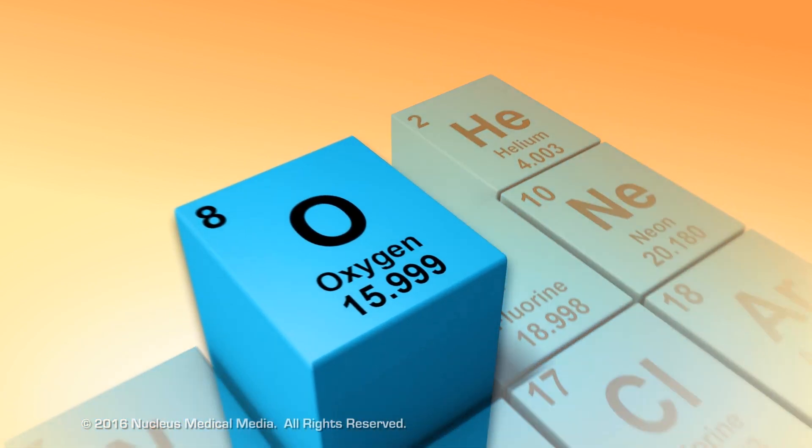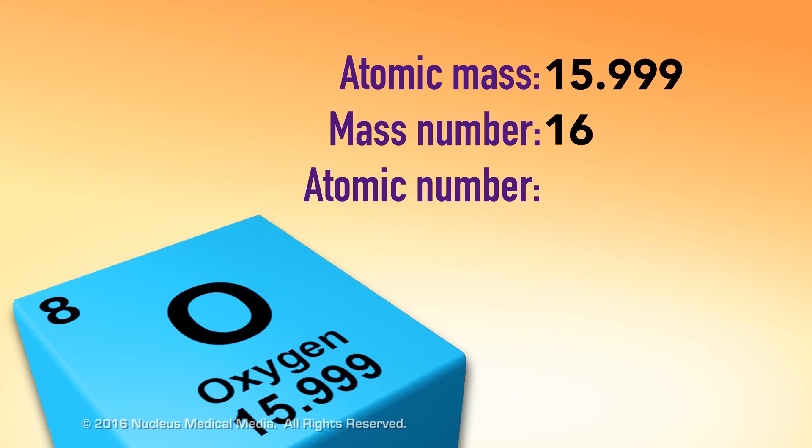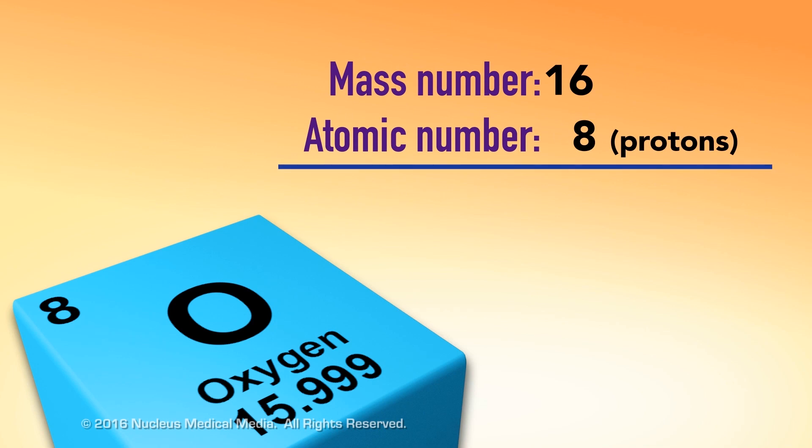In the case of oxygen, we can round its atomic mass up to get a mass number of 16. Since its atomic number is 8, we know oxygen has 8 protons. And by simple subtraction, we can determine oxygen also has 8 neutrons.